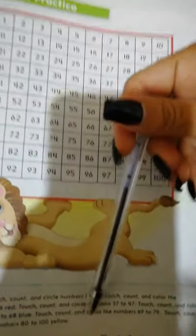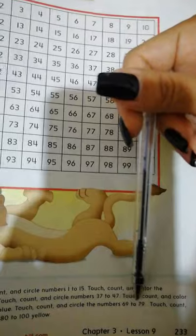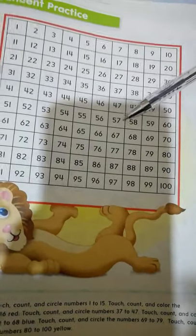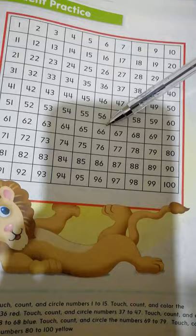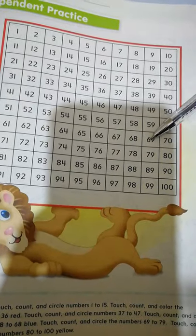And then touch, count, and circle numbers 69 to 79. Then you circle numbers from 69 to 79.